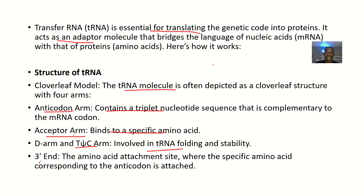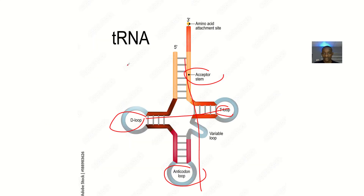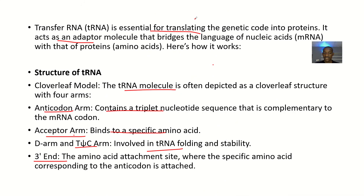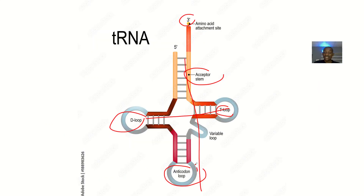You also have the 3' end. The amino acid attaches at the 3' end, where the specific amino acid corresponds to the anticodon. If you have a specific amino acid corresponding to the anticodon, it will bind at the 3' end — these are the amino acid attachment sites.